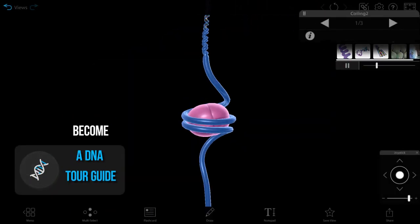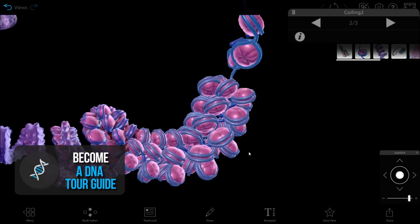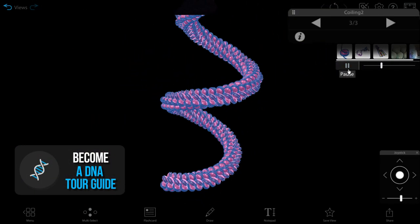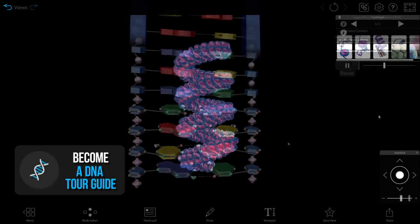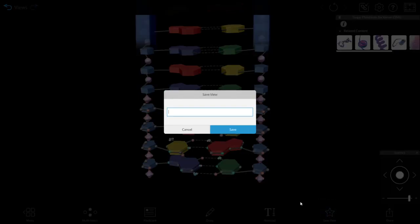You can use Visible Biology's Tours feature to show students the internal structure of DNA and how DNA is stored in chromosomes. Tours are a series of views that are perfect lecturing aids. You can design a custom tour easily. Simply access the models and save the views you would like to use in your lecture, then create a tour using these views.